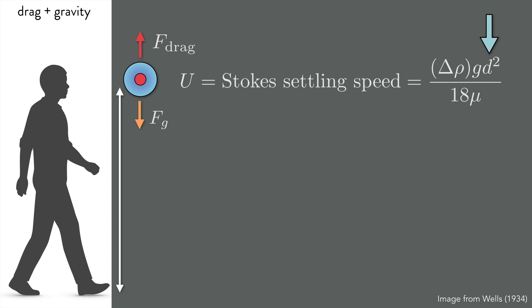This means it becomes very small if the diameter is very small. A droplet a tenth of a millimeter in size would settle in about six seconds to the ground, but a droplet a tenth of the size would require a hundred times longer to fall. Wells points out that the smallest droplets might take minutes or even hours to reach the ground if air resistance is accounted for.